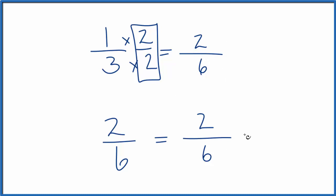But now I can compare these two fractions. And you'll notice they're the same. So two-sixths and one-third, they're called equivalent fractions. They're equal.